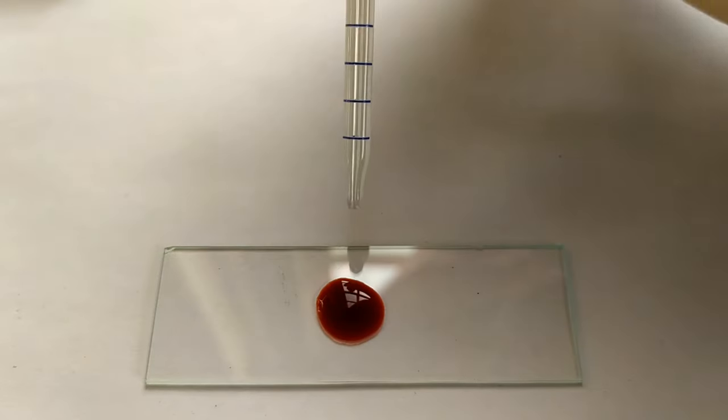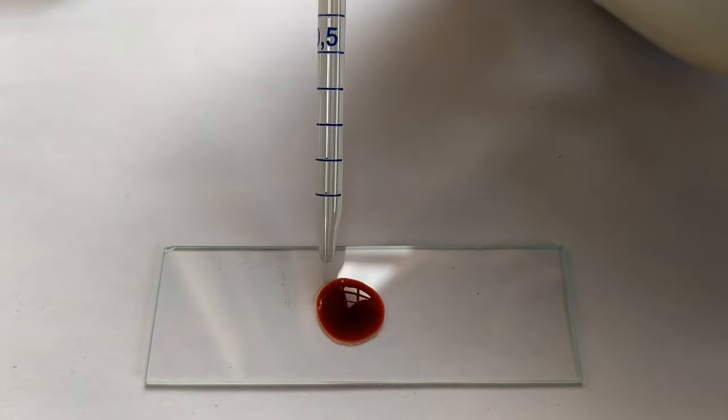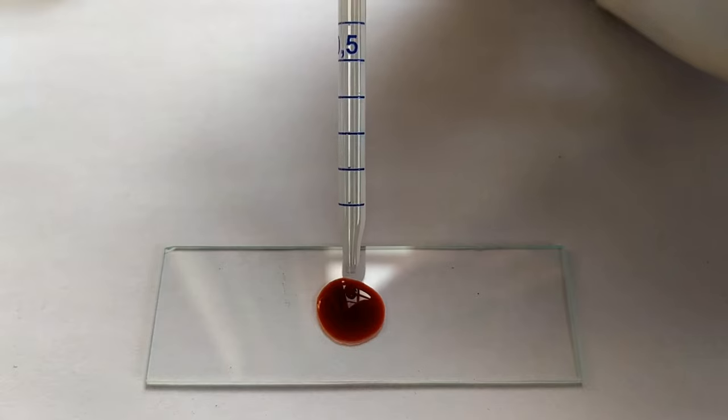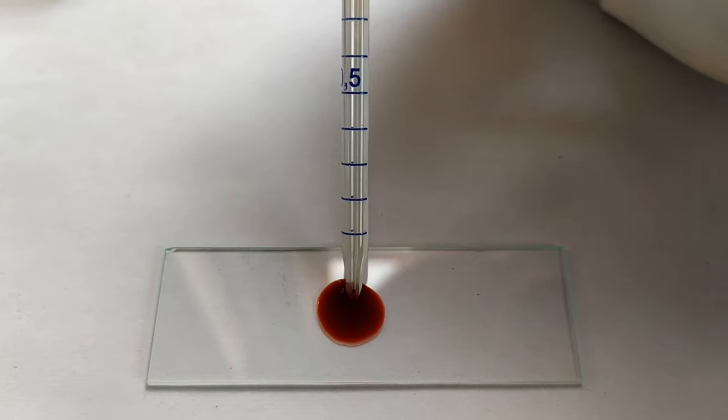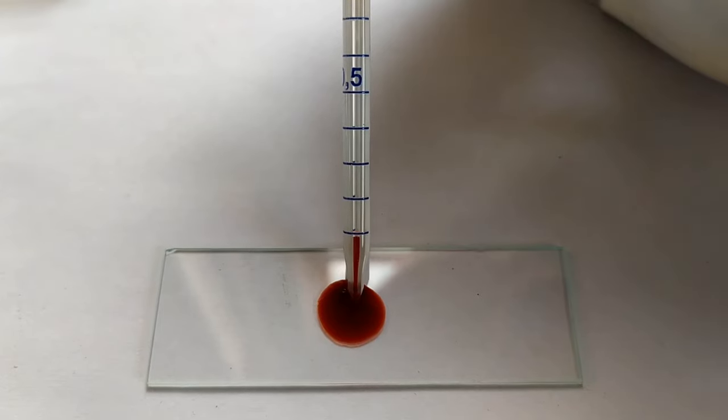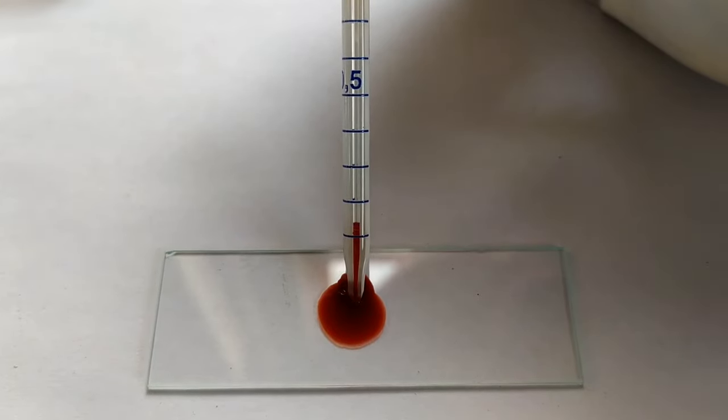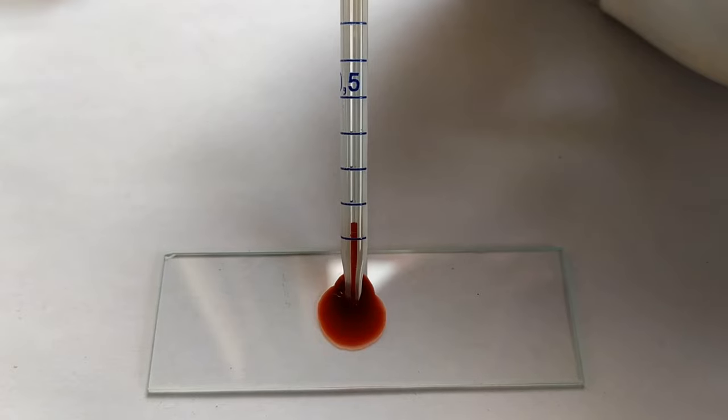Take the WBC pipette pre-cleaned with alcohol. Draw the blood sample till the 0.5 mark using your mouth or a syringe while taking care to avoid any air bubbles from entering the pipette. This step requires a bit of patience and practice.